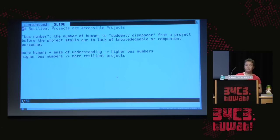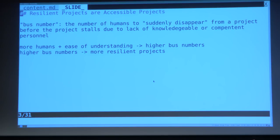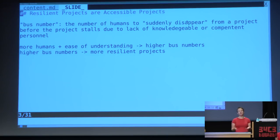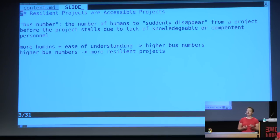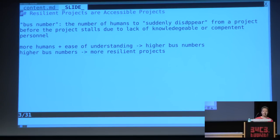I'll also talk about how we can implement increased resiliency by using good software tools for the libraries we make the OS out of. A really important concept in whether a given project is resilient is how many humans can disappear before the project grinds to a halt. We have a name for this — you've probably heard it — which is bus number, euphemistically defined by Wikipedia as a sudden disappearance. If we want to increase the bus number, the simple answer is get more humans involved, but it's not that simple.